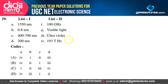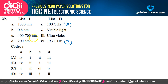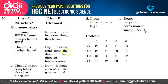Matching wavelength to frequency: 1550 nm is matched to 193 THz (A→4). 0.8 nm is matched to 100 GHz (B→1). 400 to 700 nm is the visible light range (C→2). 200 nm is ultraviolet light (D→3). Option A satisfies the explanation and is the correct option.